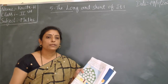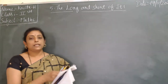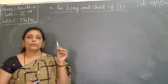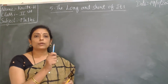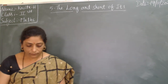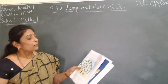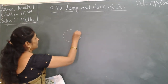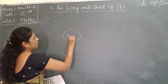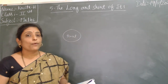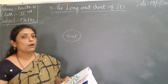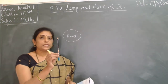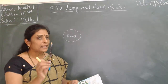You all have crayons with you? One is blue color, one is yellow color. Yellow color you give for centimeter, blue color you give for meter. For example, the first object is pencil. Pencil is a small object, so it is measured in centimeter.